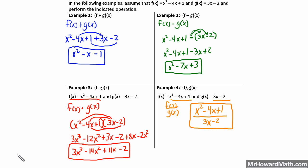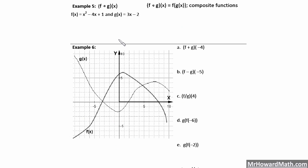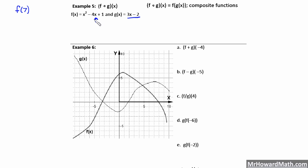We're going to look at two more examples and then we'll be done with this video. Now we're back with our last two examples. The last one is our composite function, f of g of x. We're going to take our f of x function and our g of x function and combine them. If we had f of 7, you'd plug in a 7 everywhere you see an x. So when we do f of g of x, we simply take our g of x function and plug it in everywhere we see an x in f of x.